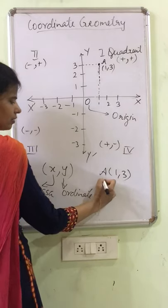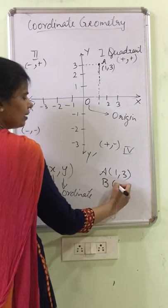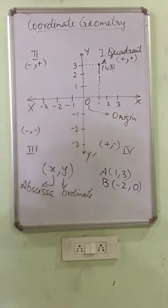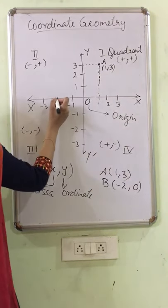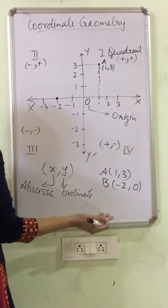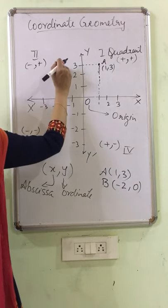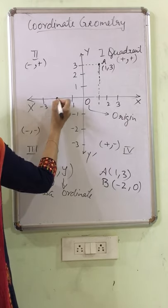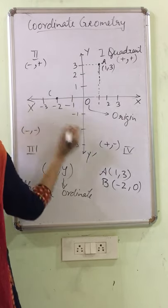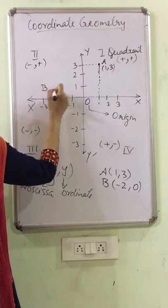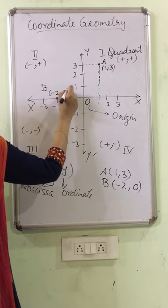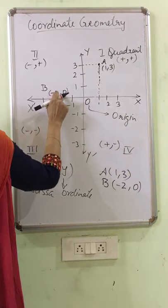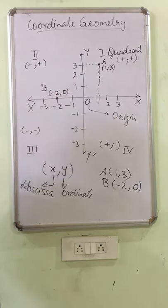If suppose, second point, I am taking minus 2, 0. Minus 2, 0 means x-coordinate is minus 2. Y-coordinate is 0, it means neither we are shifting up or down. So we are shifting to this point. This is my point B, minus 2, 0. It means from all x-axis, you have to always take y-coordinate as 0. If the point is on x-axis, y-coordinate is 0.